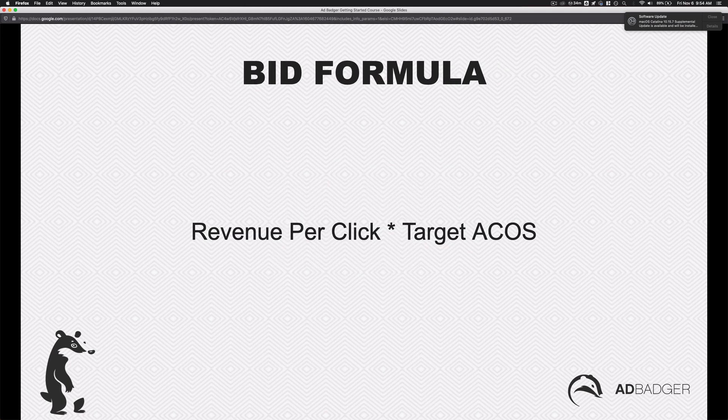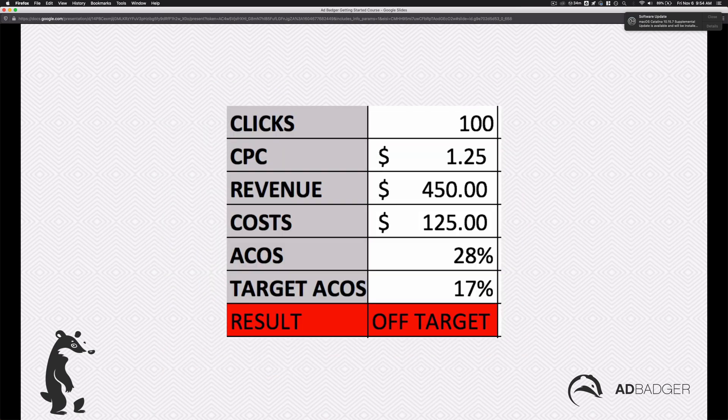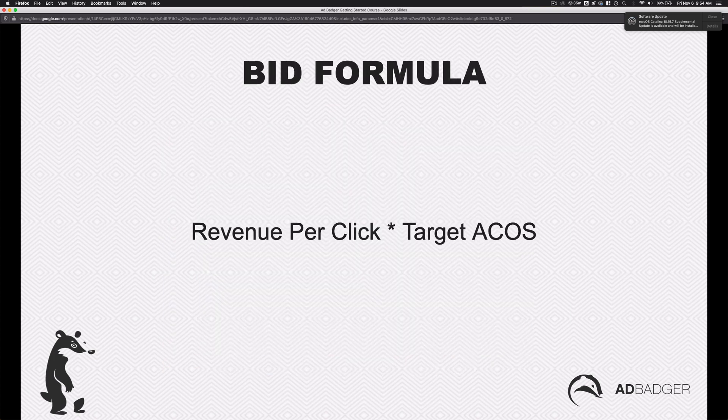The formula is generally: revenue per click multiplied by the target ACOS. Revenue per click is simply how much revenue divided by the number of clicks — that's how much revenue a keyword generates, and how much you could expect the next click to generate. So if you generate $10 revenue per click and you have a 50% target ACOS, then 10 multiplied by 50% would be $5. That means every time you get a click, you generate $10 of revenue on average, you pay about 50% of that — meaning $5 — and you'd eventually land at a 50% ACOS.